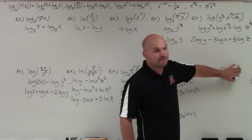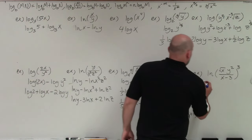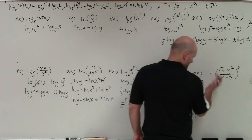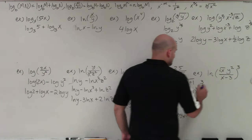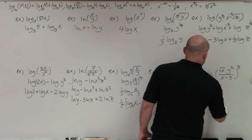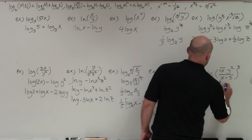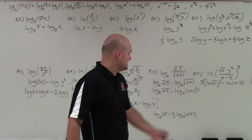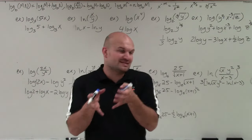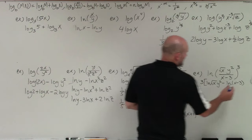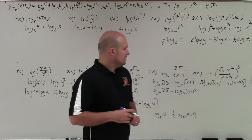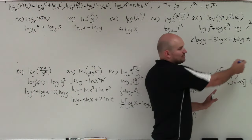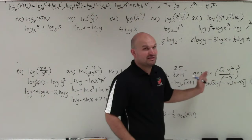Whenever I have a power, I want to bring that power in front first. Then I apply the quotient rule. I'm going to put x minus 3 in parentheses, because it's a product all into itself. I also need to make sure I put parentheses around the other term. The reason is that if you were to condense these back, the 3 needs to apply to both terms, so it's really important that you keep those parentheses.